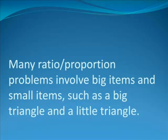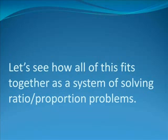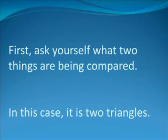Many ratio proportion problems involve comparisons of large and small things. In this case, the things being compared are triangles, one big and one small. Now versus later is also a common comparison found in ratio proportion problems. With those general comments having been made, let us start setting up this problem. First, ask yourself what two things are being compared. In this case, it is two triangles.